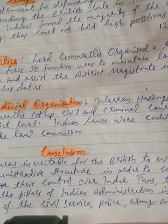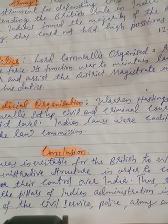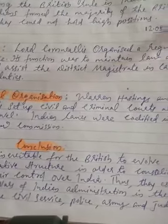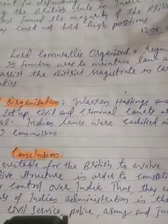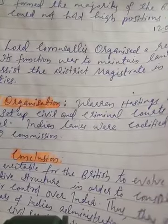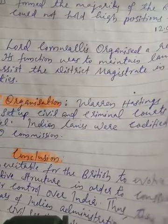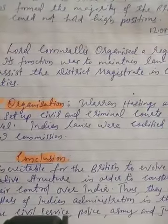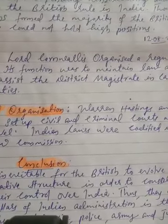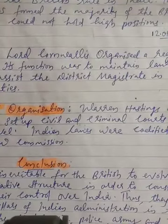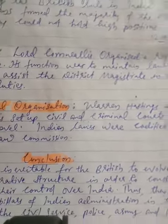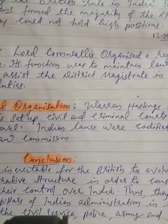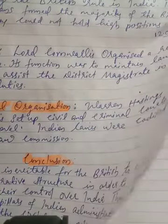Thus, they established the pillars of Indian administration in the form of civil service, police, army, and judiciary. As India was divided into different territories in the early years when the British started to take control, there was no place for nationalism and unity among Indians.